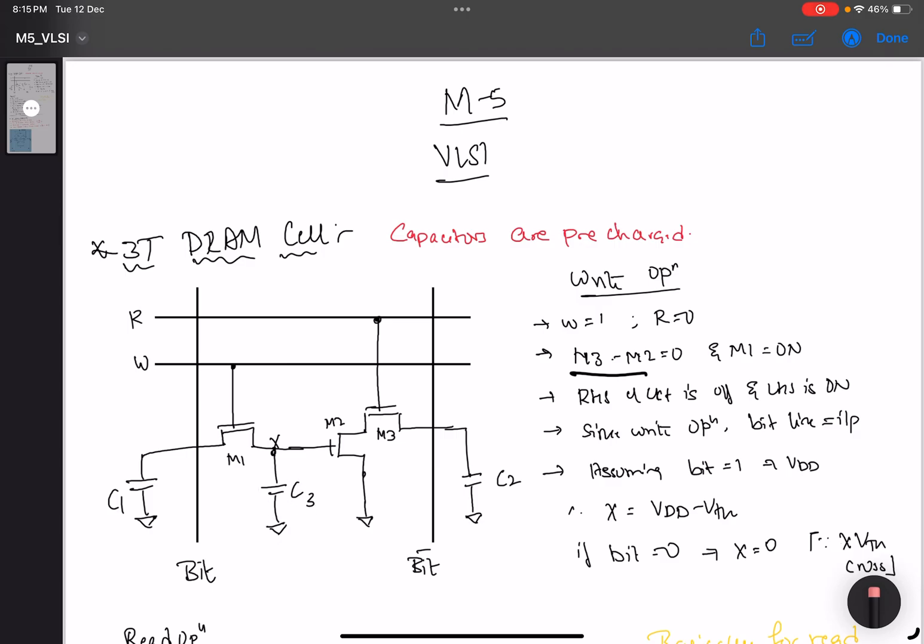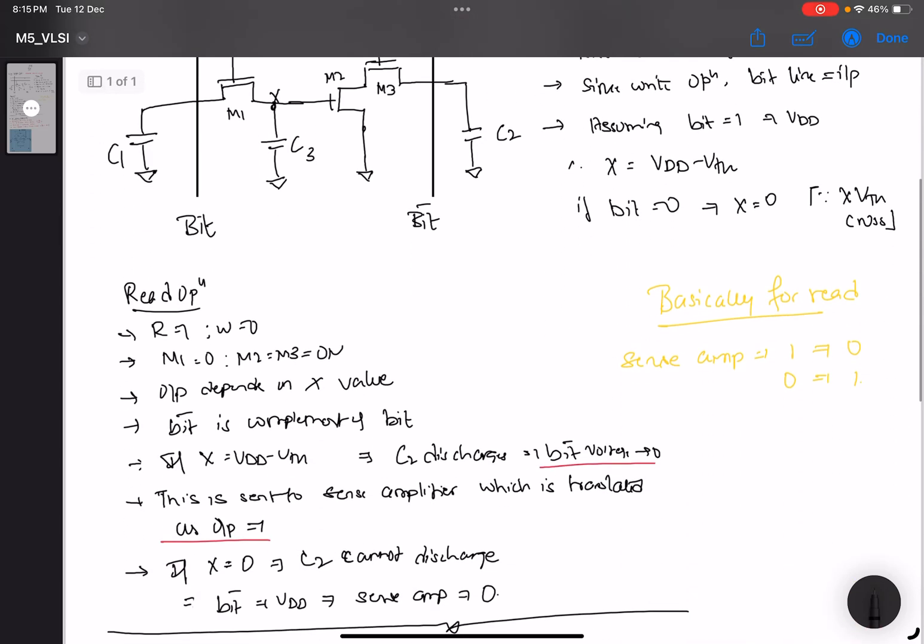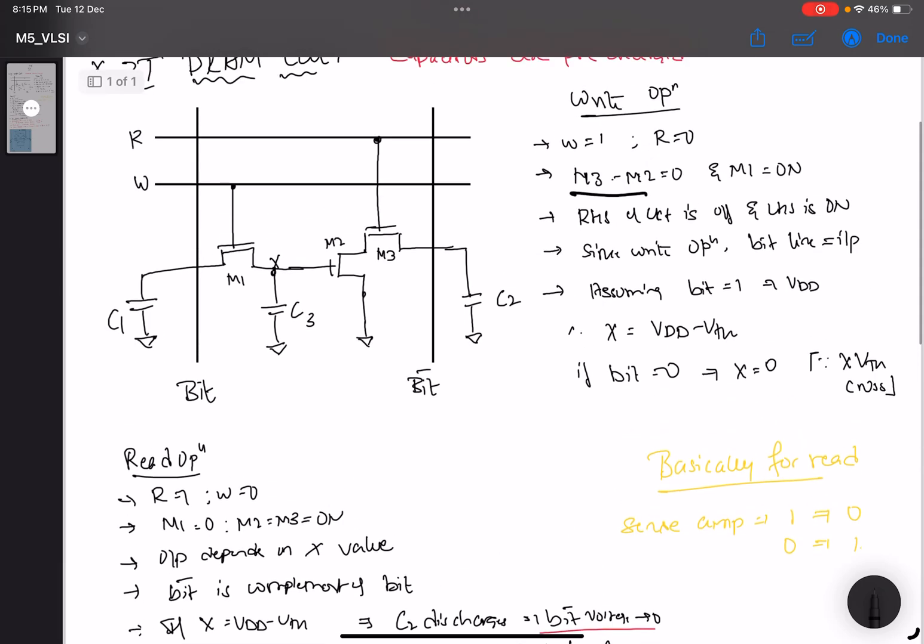This is your write operation. Now for the read operation, R is equal to 1, W is equal to 0, just the opposite. With that logic, since R is equal to 1 and W is equal to 0, this will be off and this will be on, M2 and M3 will be on.